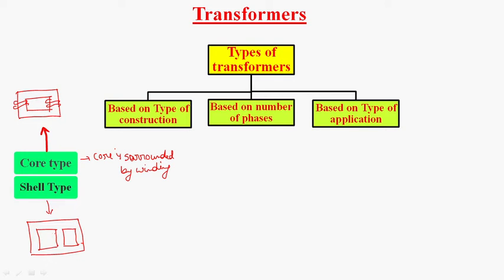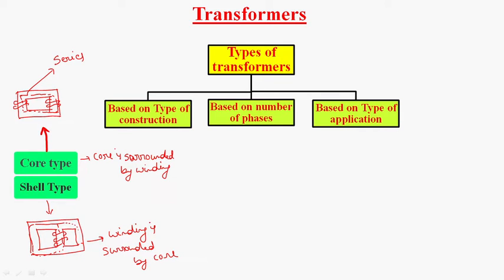Whereas in case of shell type transformer, the winding is surrounded by the core. There is no flux division taking place in case of core type transformer — it is a series magnetic circuit. But in the shell type case, flux division is taking place, so it is called a parallel magnetic circuit.